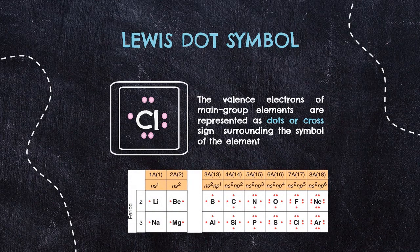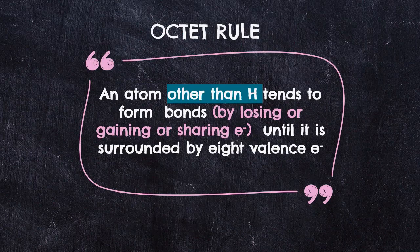Shown below is the Lewis dot symbol of elements in period 2 and 3. In group 1, we have only one valence electron, that's why we have only one dot. Looking at group 18, since the valence electron consists of 2 from the S orbital and 6 from the P orbital, they have all 8 electrons surrounding the element. When atoms have fewer than 8 electrons, they tend to react and form a more stable compound via losing, gaining, or sharing of electrons — in other words, they obey the octet rule — so they can participate in bond formations. This rule works mainly for period 2 elements.